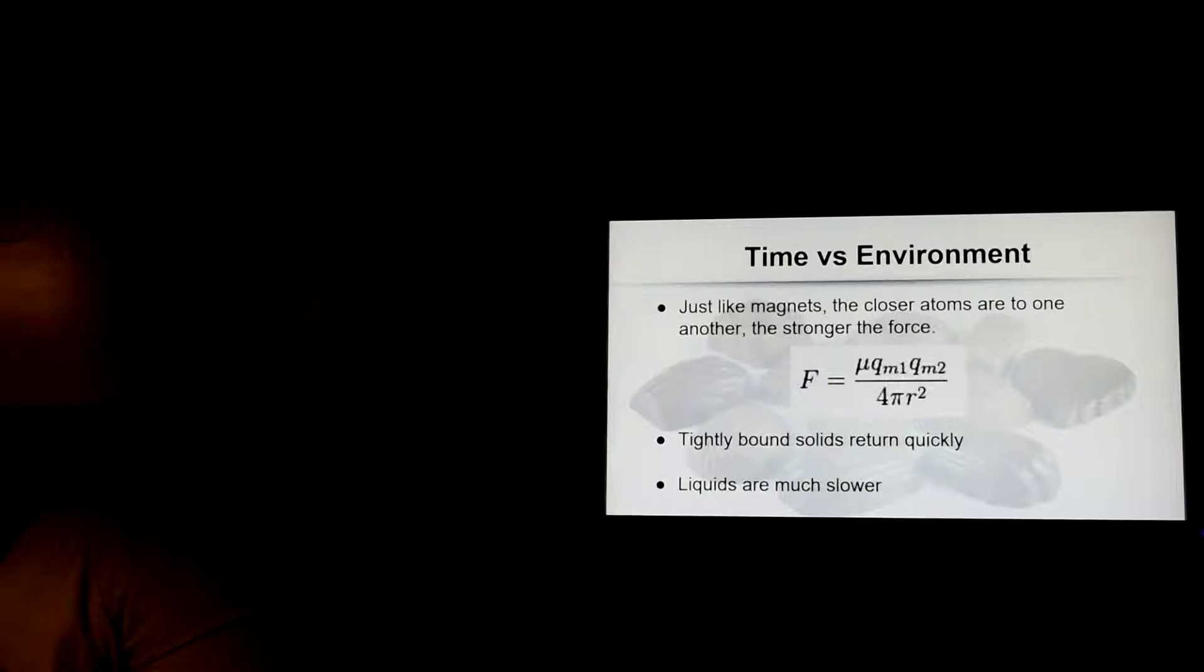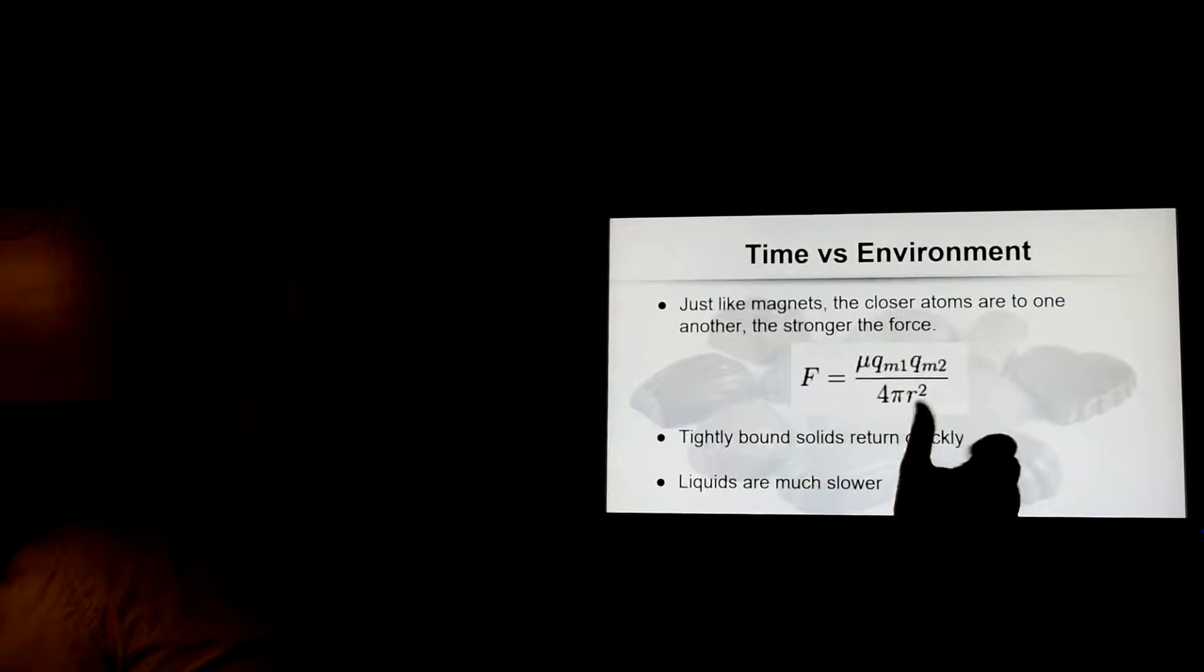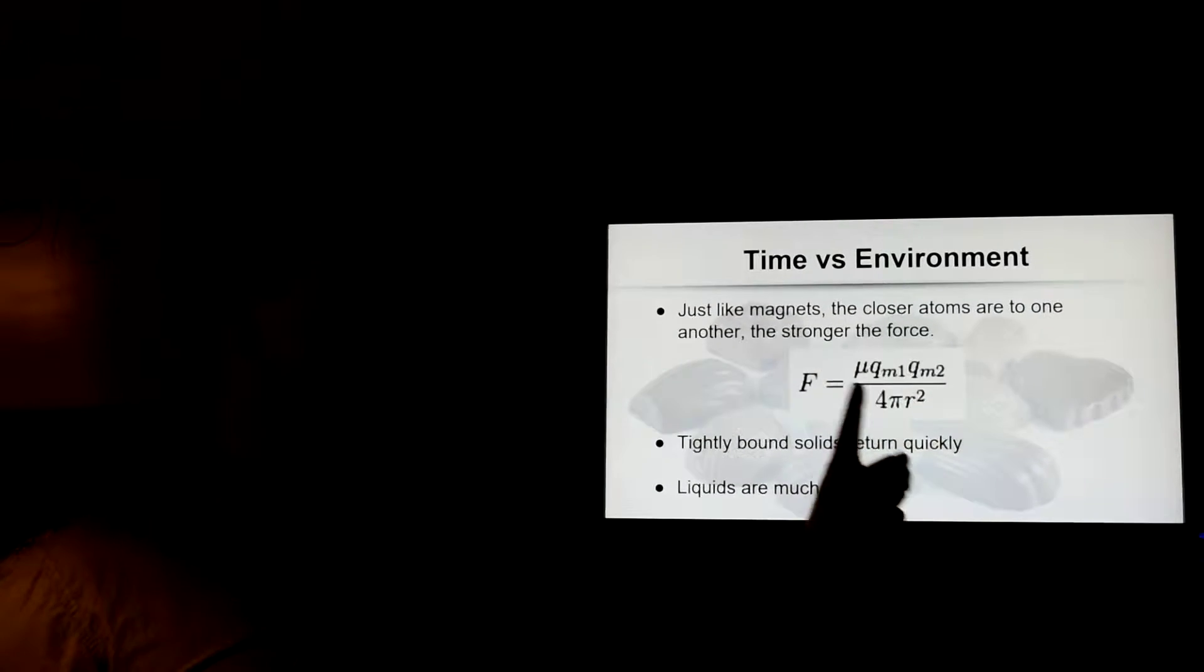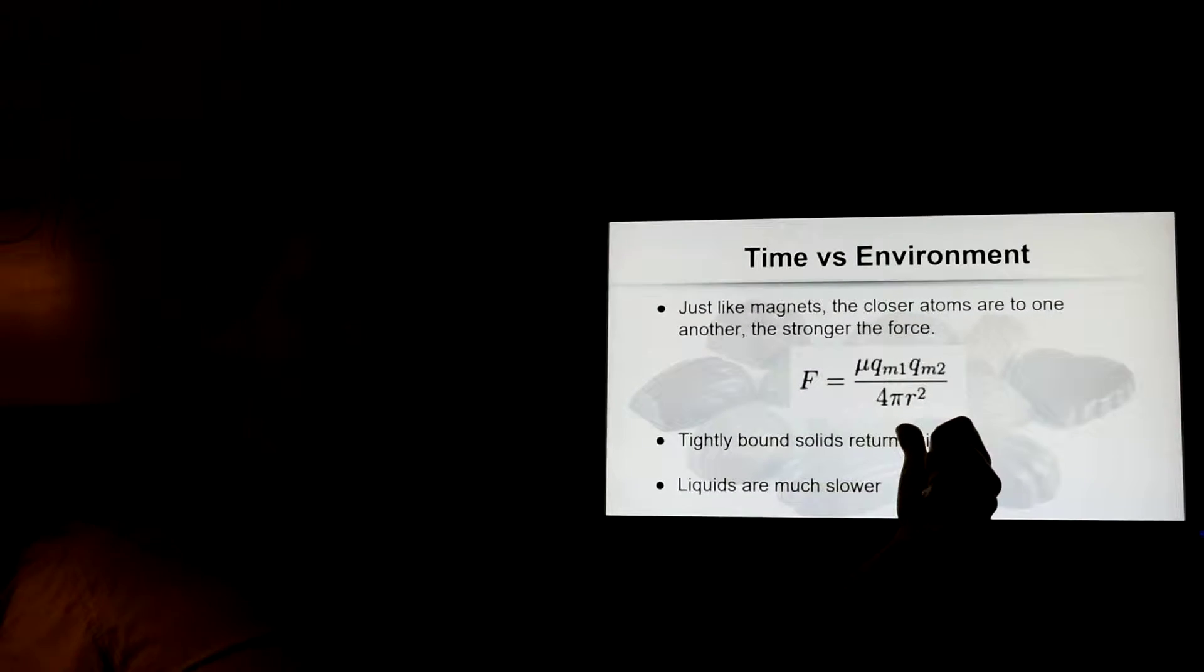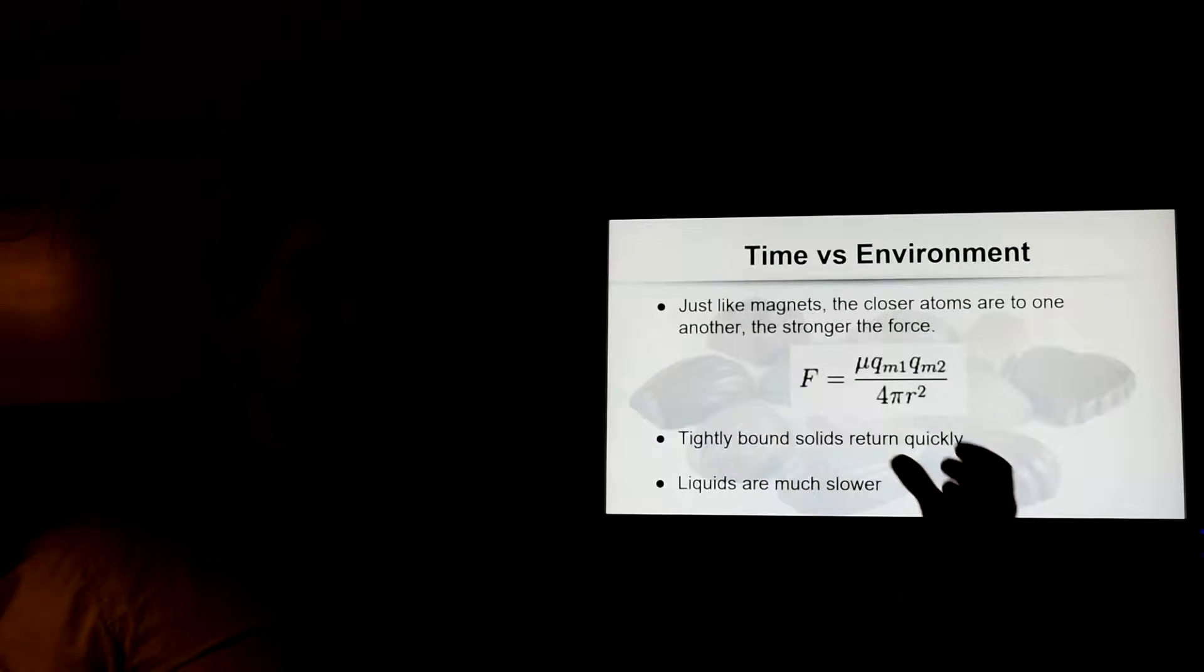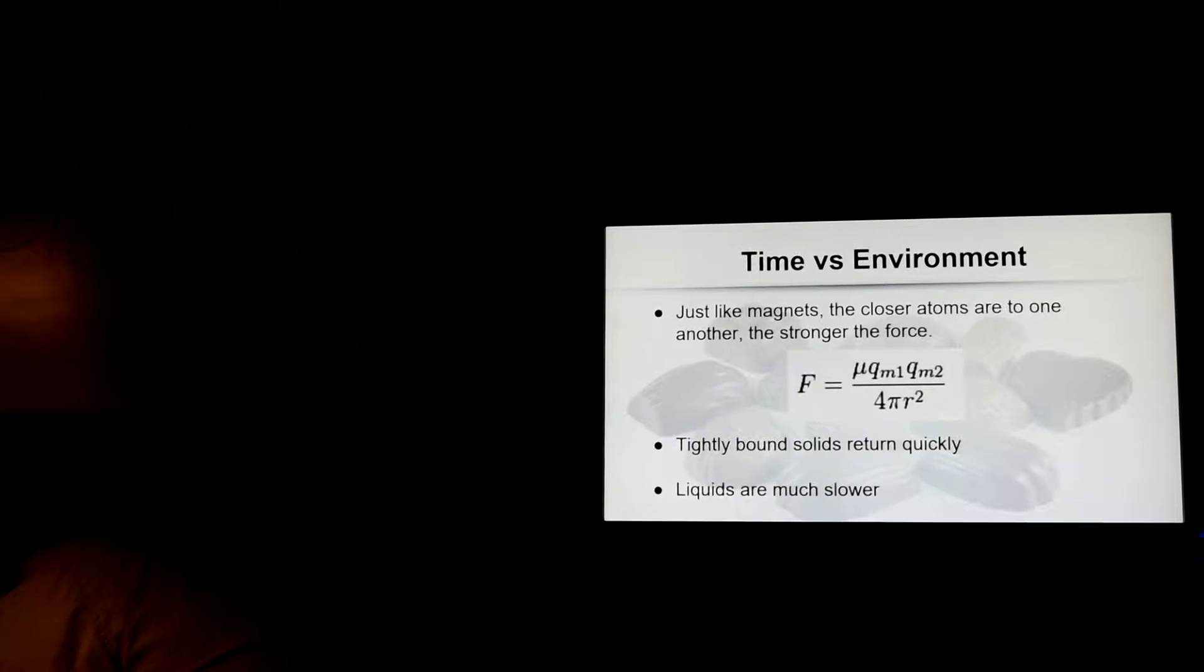Now, time versus environment. The more tightly, closer at least, the atoms are to one another, or the magnets are to one another, the stronger the force. And that's very evident by the equation. Because R is the distance between the two magnets, or the two atoms, the closer they are, or the smaller that number, the larger the force. And because it's R squared, it actually goes up very significantly. So we can easily distinguish between solids and liquids by the speed at which they come back, being pulled on harder, or less hard, by the surrounding environment.